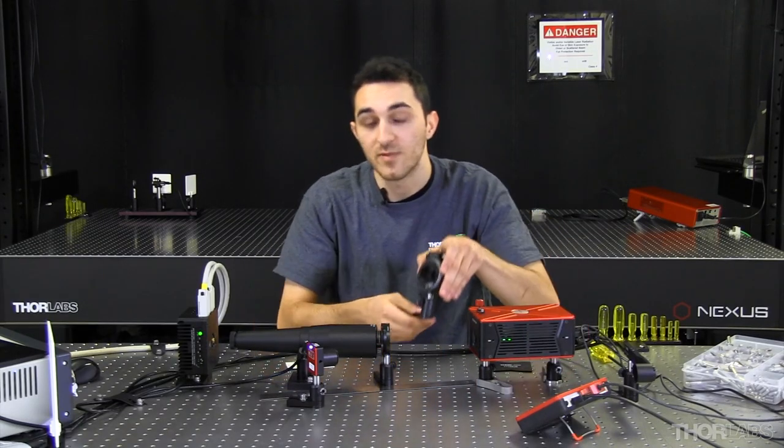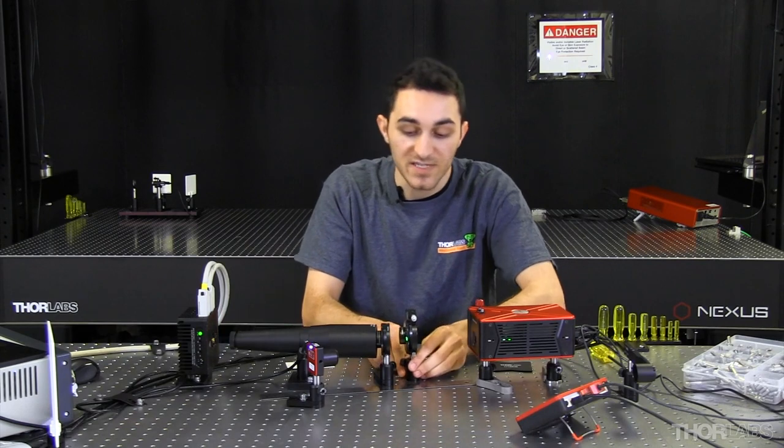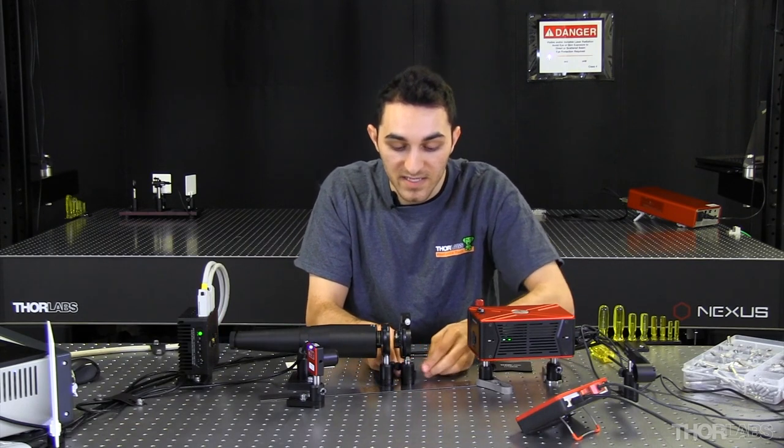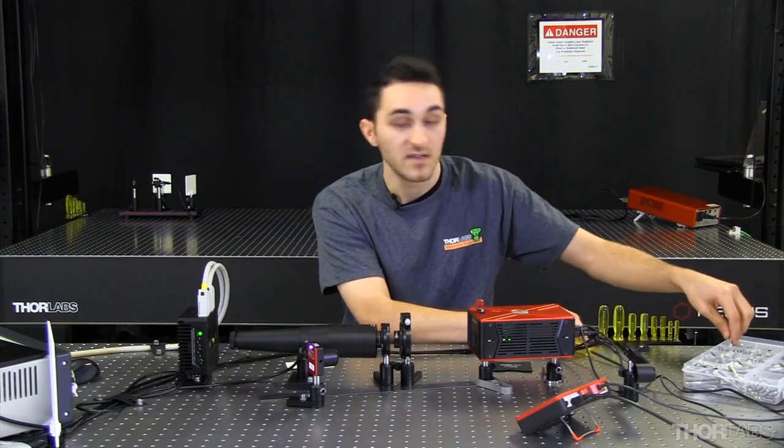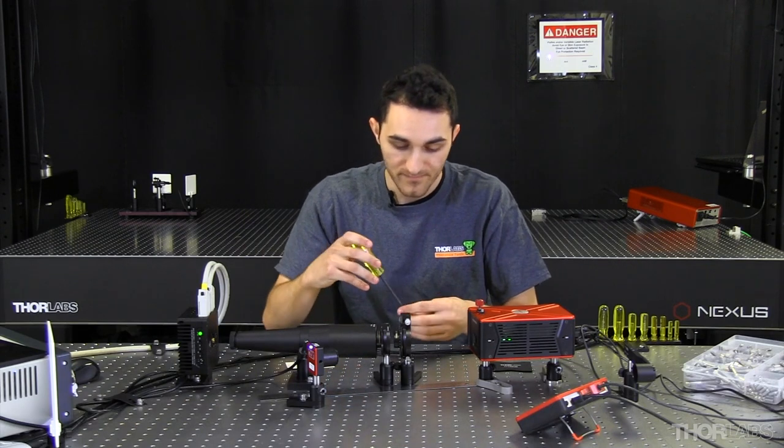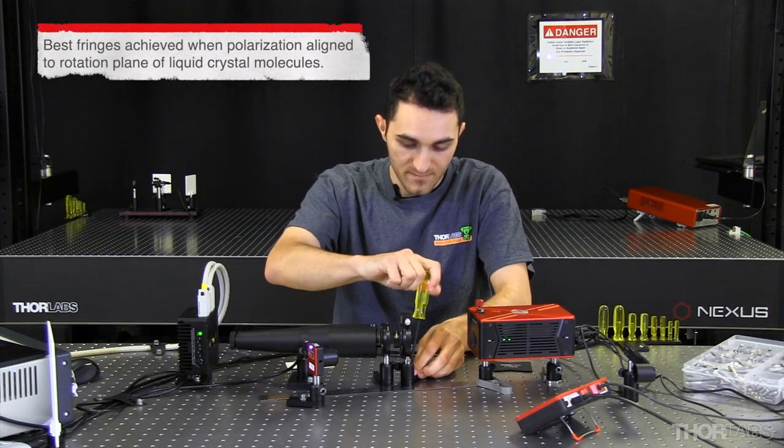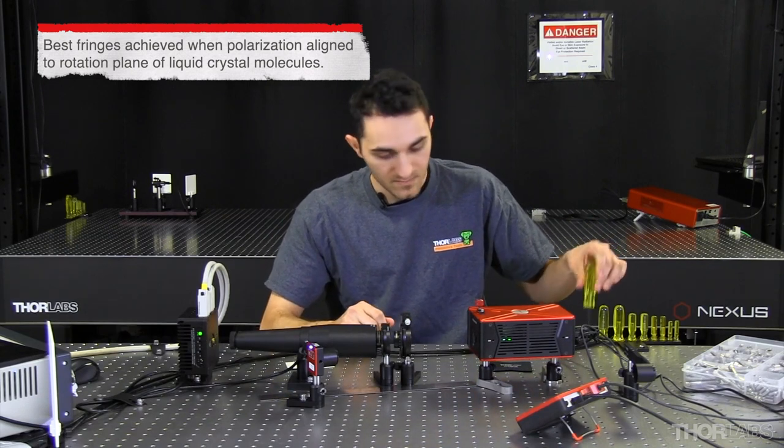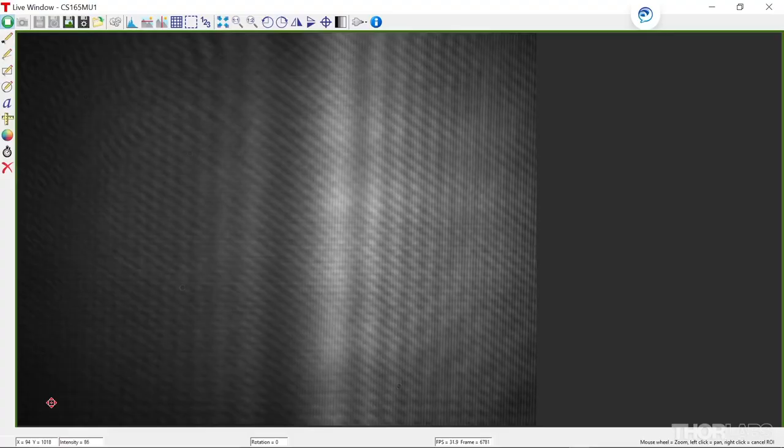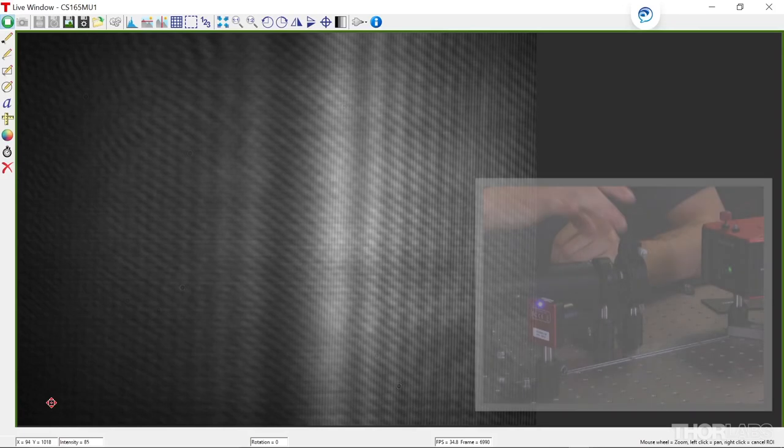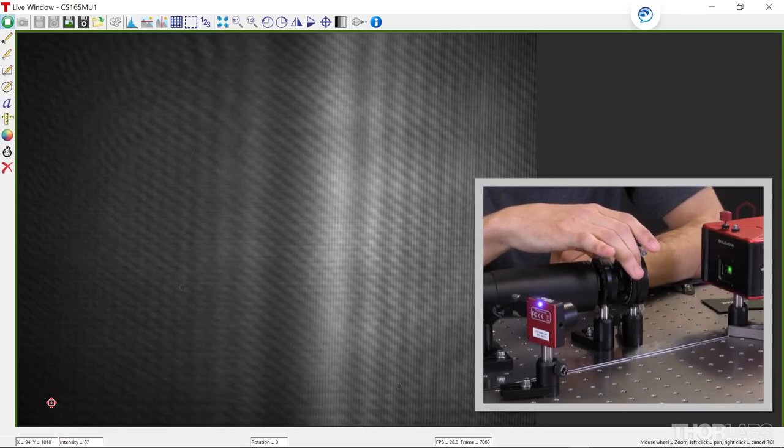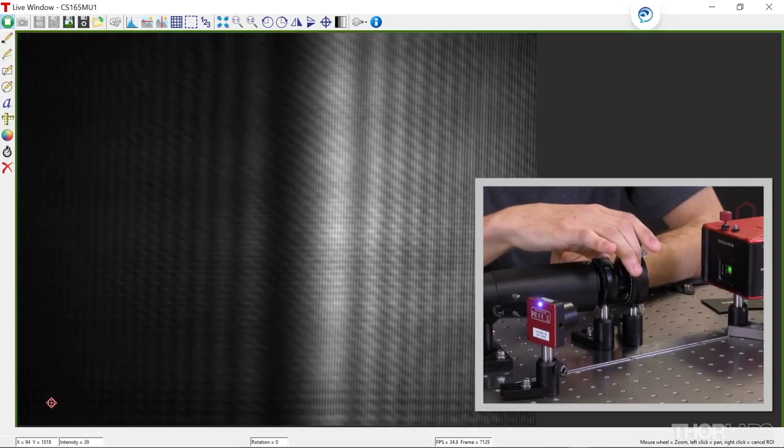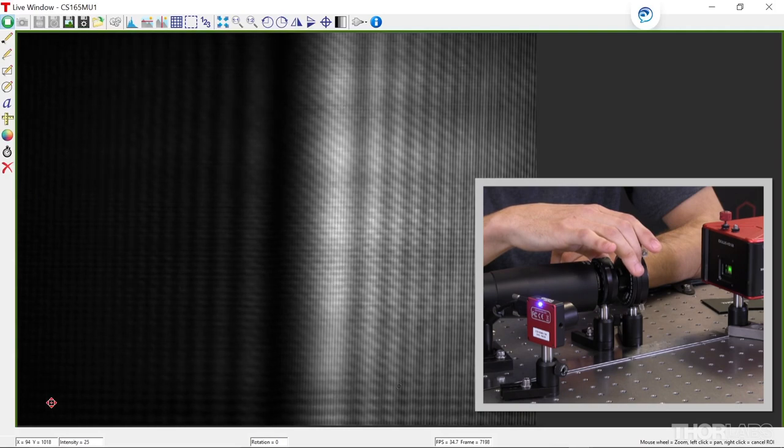By adding a half-wave plate, I can rotate the polarization state without impacting the amount of light incident on the SLM. This looks a lot better. However, I want to see if I can improve the fringe contrast by rotating the half-wave plate. That looks good.